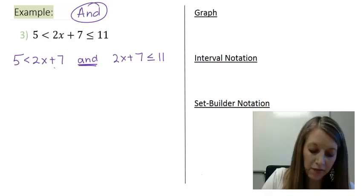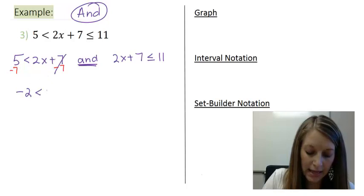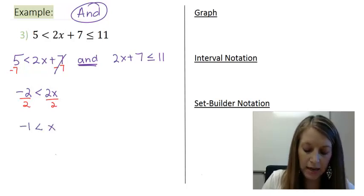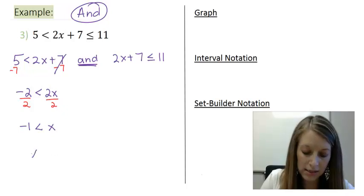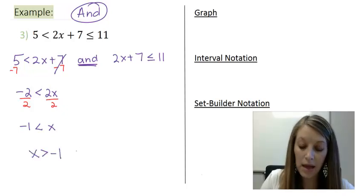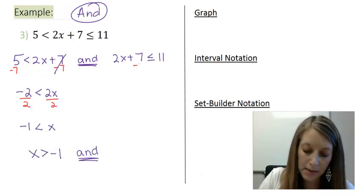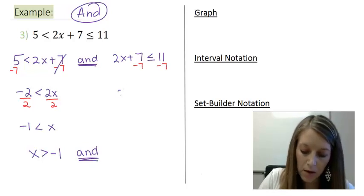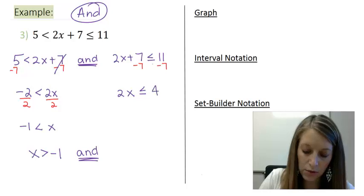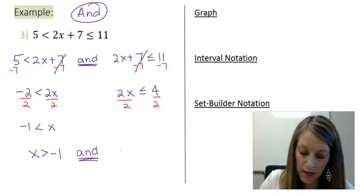So on the left my first step is to subtract 7, gives me negative 2 is less than 2x. Divide by 2 gives me negative 1 is less than x, or the better way to write this is x is greater than negative 1, and don't ever lose the wording in the middle. On the right same steps, subtract 7, 2x is less than or equal to 4.